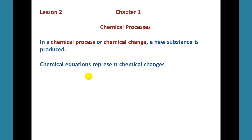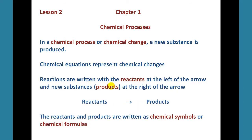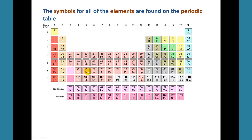Chemical equations represent chemical changes. We write a reaction with the reactants on the left side of the arrow and products on the right side of the arrow. So these would be the reacting substances, and here would be the new substances formed. We write the reactants and products as chemical symbols or chemical formulas.